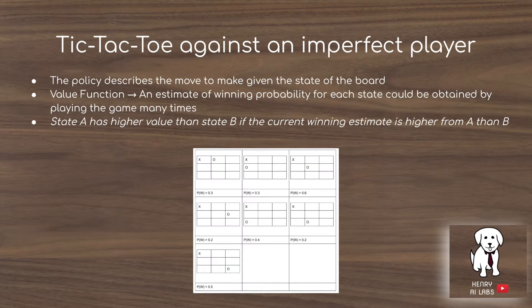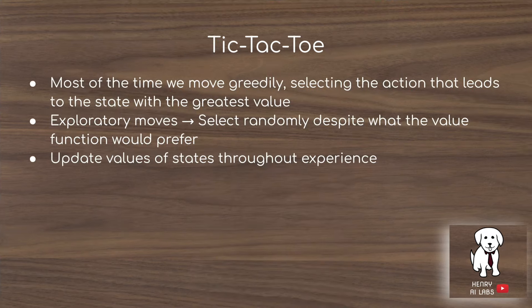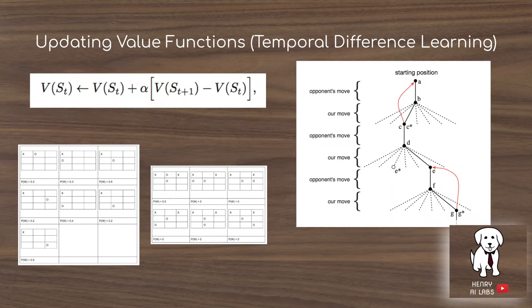Tic-tac-toe is a great example to get started with reinforcement learning. The policy describes where to put your piece on the game board given the current state, and the value function is the estimate of the expectation of winning for each state given the current board. Most of the time the agent moves greedily, selecting the action that leads to the state with the greatest value, but an exploration move means selecting randomly regardless of which state has the highest expectation of winning. As you play the game you update the values of states through experience using the temporal difference learning rule. The temporal difference update takes the current estimate and updates it by a fraction of what is found in the next state — as shown in backup diagrams, you go from move to move and back up the reward using this function to update the previously assigned values of each intermediate state.